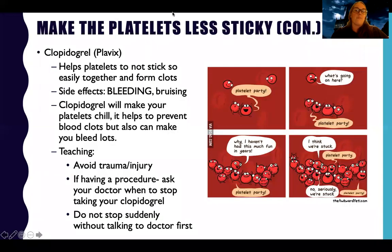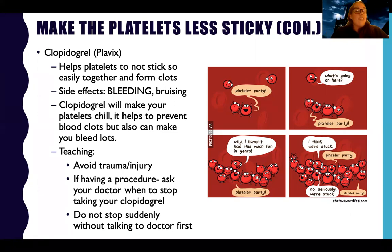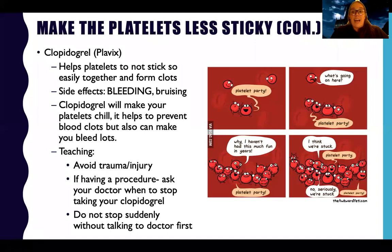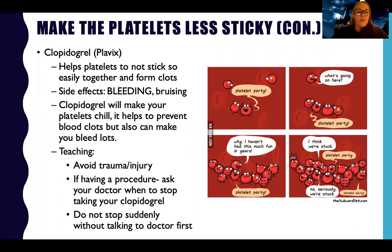Clopidogrel (Plavix) is the other antiplatelet medication. Both aspirin and clopidogrel do the same thing — prevent platelets from sticking together. Clopidogrel doesn't have the same GI side effects as aspirin; the main concern is bleeding. As a mnemonic: 'Clopidogrel will make your platelets chill — it helps prevent blood clots but also can make you bleed lots.' Teach patients to avoid trauma, report bleeding, and never stop suddenly without talking to their doctor.